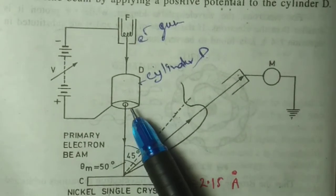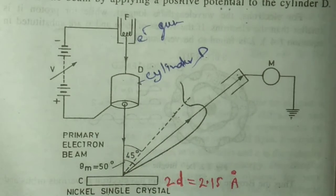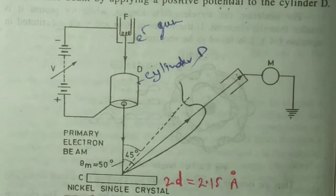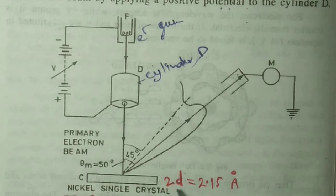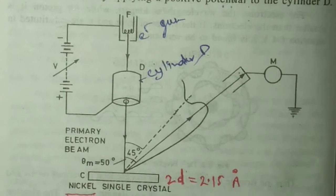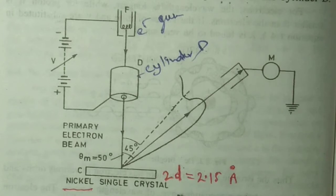After passing through cylinder D, the beam is incident on a nickel single crystal which has a 2d value of 2.15 angstrom. This d is the interplanar spacing of the nickel crystal.